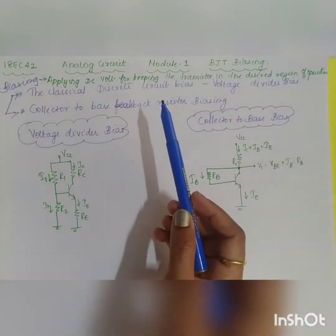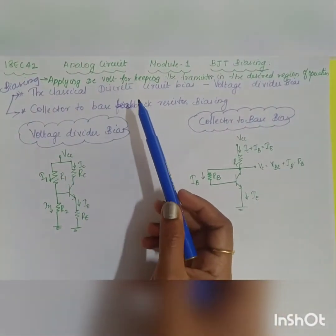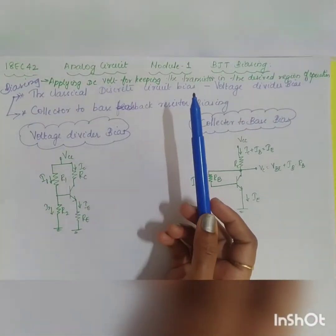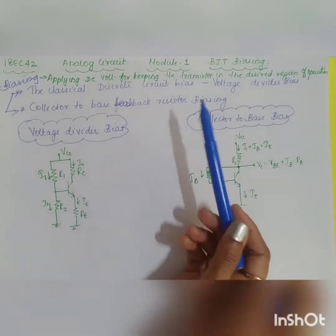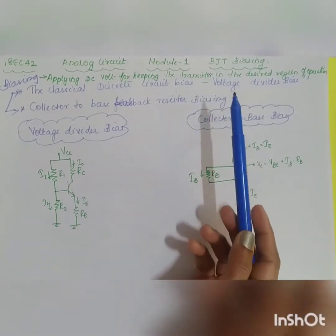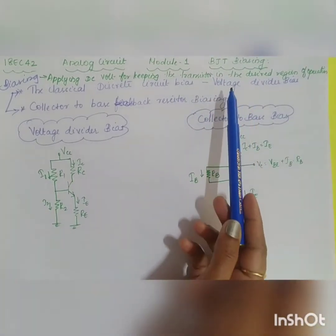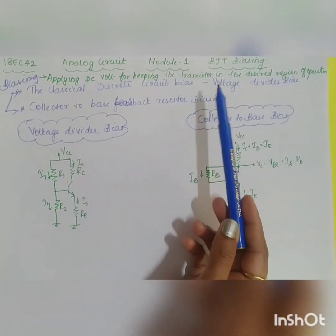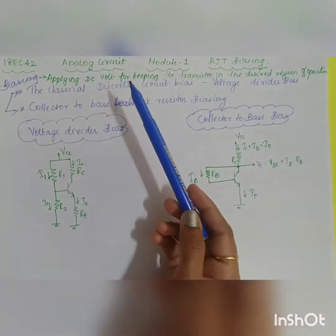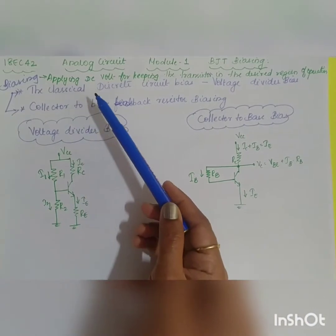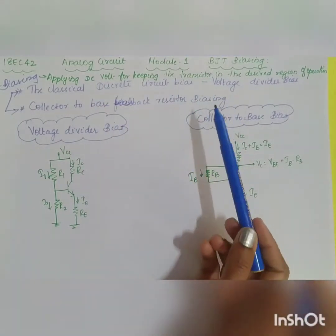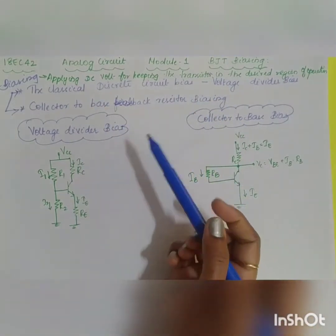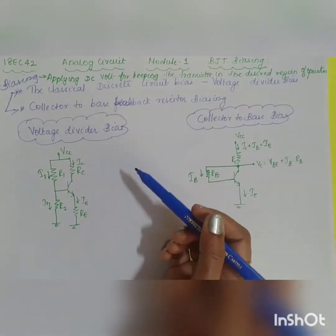The first topic in the first module of analog circuits is BJT biasing. Before going on to the topic, we should know what is meant by biasing. Biasing is applying a DC voltage for keeping the transistor in the desired region of operation.